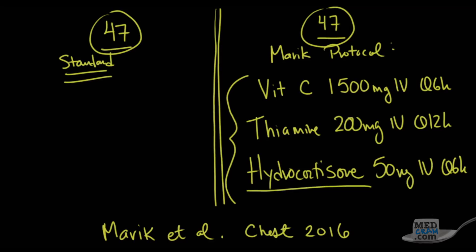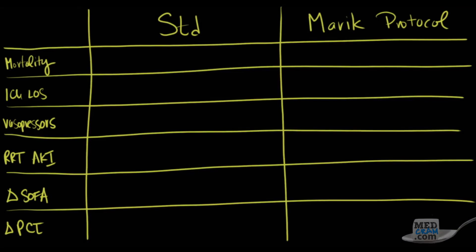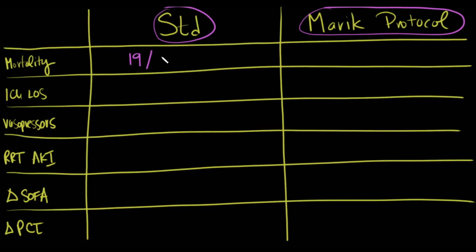So let's take a look and see what the results were from standard therapy, which is listed here on the left, versus the Marik protocol which we've just described in those 47 patients. So the first thing we're going to look at is hospital mortality. So how many people died in the conventional group? It was 19 patients that died out of the 47 patients. So that works out to be about 40 percent. Whereas in the Marik protocol, there was four out of 47 patients that died, and that's only about nine percent. So there was a huge difference there. And the p-value on that, we'll just squeeze it in over here, was significant at 0.001.